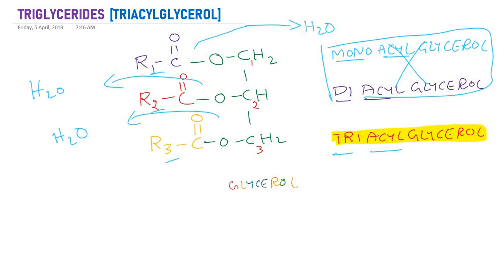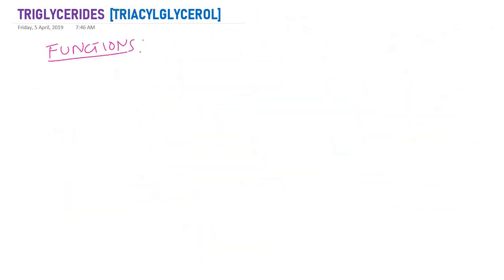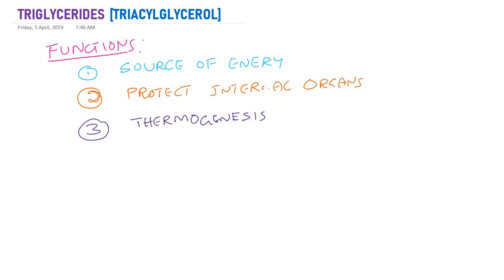Now, what are the functions of triglycerides? They are a rich source of energy — when compared to carbohydrates, they give twice the energy because they yield much more ATP. They also protect our internal organs: the kidney, heart, and other organs are surrounded by fat, which is nothing but triacylglycerols. They protect internal organs and also provide thermogenesis — thermo means heat. Especially in newborn babies, they require warmer temperatures.